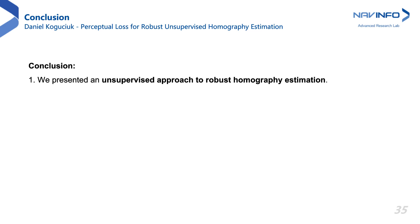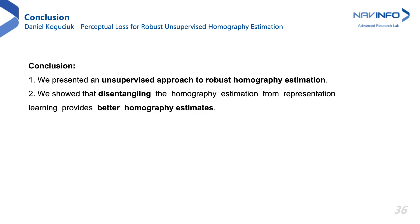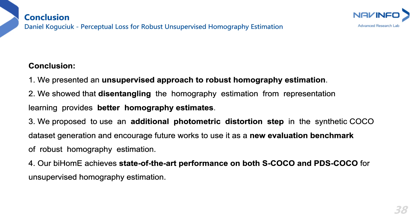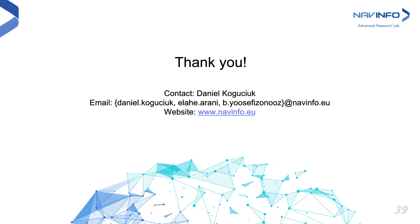To conclude, we presented an unsupervised approach to homography estimation that is robust to big illumination and viewpoint changes at the same time. We showed that disentangling the homography estimation from representation learning provides better estimates. We also proposed to use an additional photometric distortion step in the synthetic COCO dataset generation, and encourage future works to use it as a new evaluation benchmark for robust homography estimation. We presented a study of modern homography estimation baselines along with our bidirectional implicit homography estimation BiHOMI loss on both S-COCO and PDS-COCO. BiHOMI achieves a new state-of-the-art performance for unsupervised homography estimation, which is also comparable or better compared to supervised approaches. Thank you all for watching.